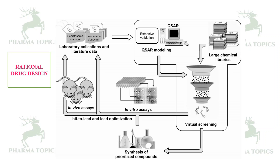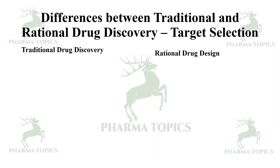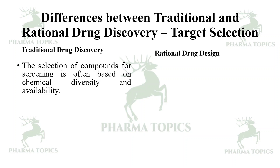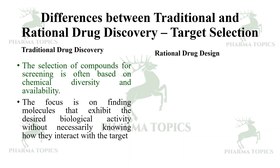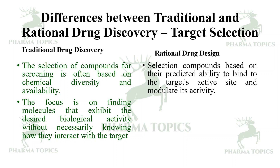Now let us see the differences between traditional and rational drug discovery strategies. In target selection, traditional drug discovery selects compounds for screening based on chemical diversity and availability, focusing on finding molecules with desired biological activity without necessarily knowing how they interact with the target. In rational drug design, compound selection is based on predicted ability to bind the target's active site and modulate its activity.